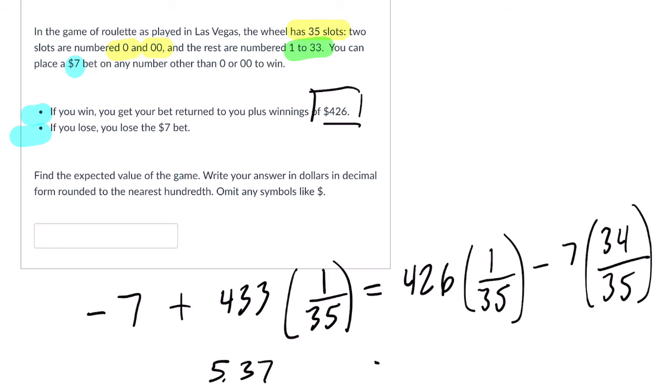And then let's check the right side to make sure that works. You might pause the video and try it. 426 times 1 over 35 minus 7 times 34 over 35, and we get the same thing. It's $5.37.